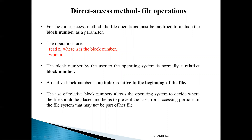File operations in direct access use readN and writeN, where N is the block number — unlike sequential access which uses readNext and writeNext. The user specifies a relative block number, not the actual block number. Relative block numbers are used to prevent users from accessing portions of the file system they are not allowed to access. For example, a user may specify relative block number 0, which might actually correspond to disk address 14544. The mapping from relative block number to actual disk address is performed by the operating system.